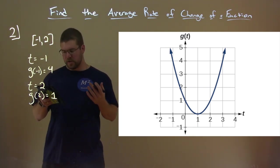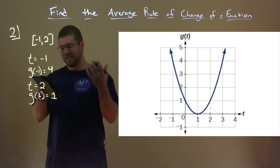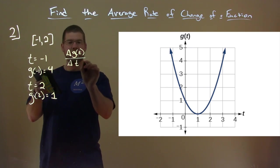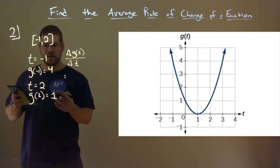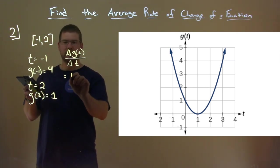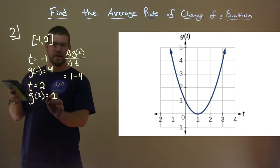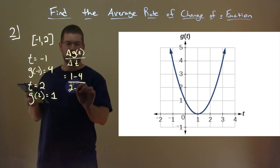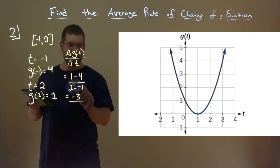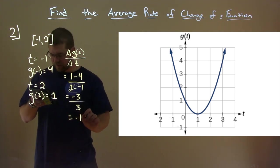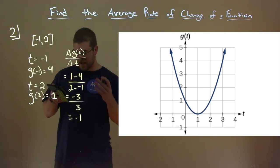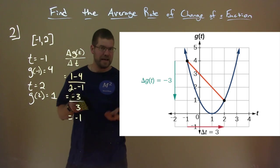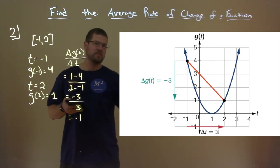Now we use our rate of change formula: delta g(t) over delta t. The outputs give us 1 minus 4, and the inputs give us 2 minus (−1). That's a negative 3 in the numerator and a positive 3 in the denominator, which comes out to negative 1. So our average rate of change is negative 1. You can see the orange line on the graph connecting the two points — that line has a slope of negative 1. That's our average rate of change shown on the graph.